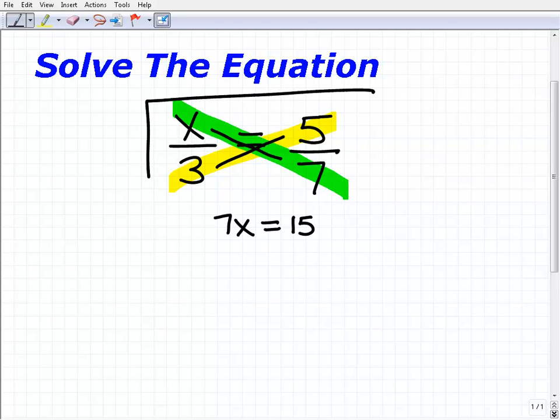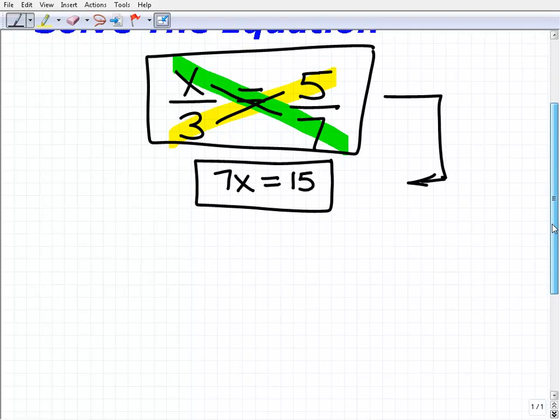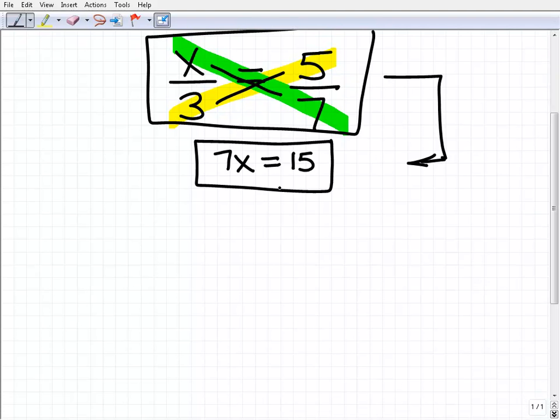So my original equation is equivalent to this equation down here: 7x equals 15. Okay, so we just took this more complicated fractional equation and we wrote it into something nice and easy—7x equals 15.